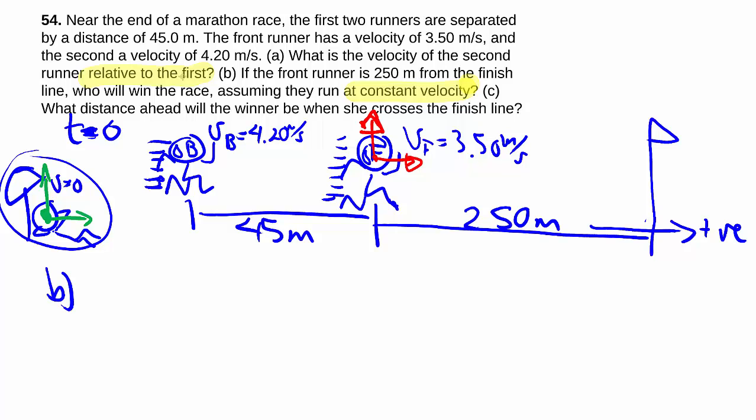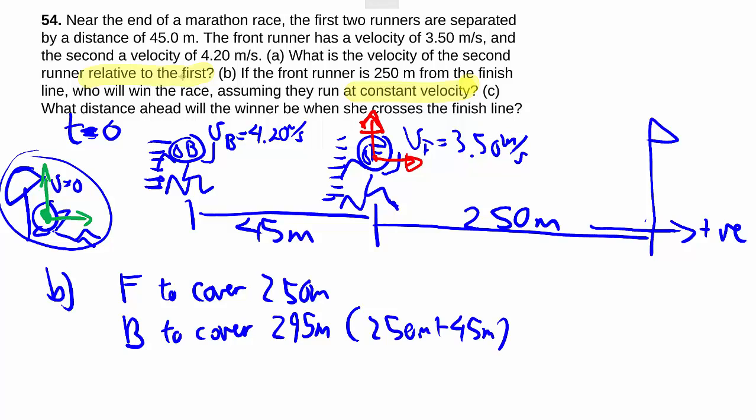So to find out who wins, we're going to compare how long it takes F to cover 250 meters versus the back guy to cover 295 meters because that's 250 meters plus 45 meters. It's a bit of a toss up because the front runner has less distance to cover, but he's running slower.